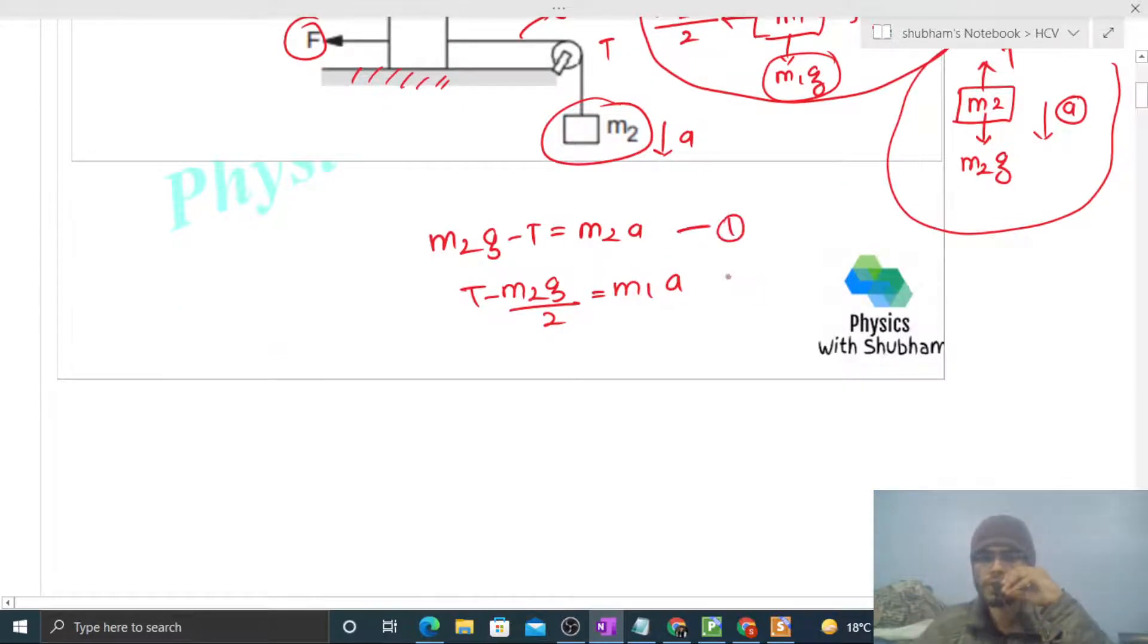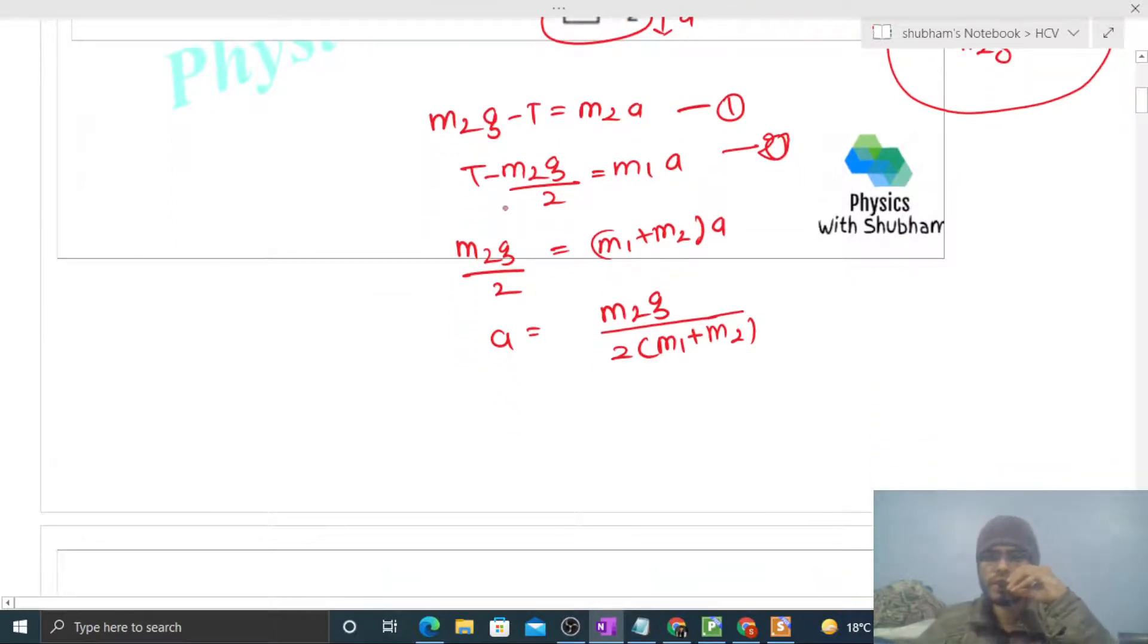Two equations, two variables. Let's add both equations. Tension will cancel and m2g divided by 2 remains, which equals m1 plus m2 into a. From here, a will be m2g divided by twice of m1 plus m2.